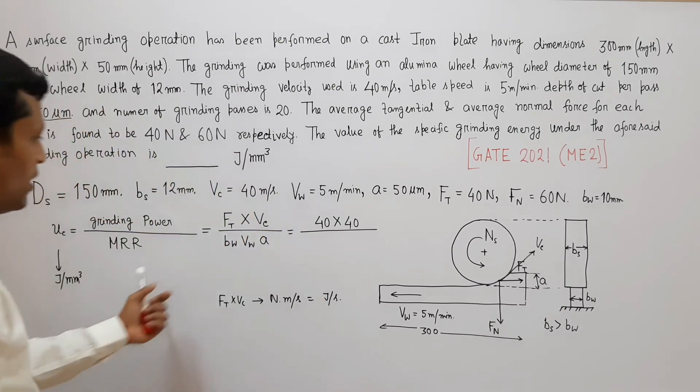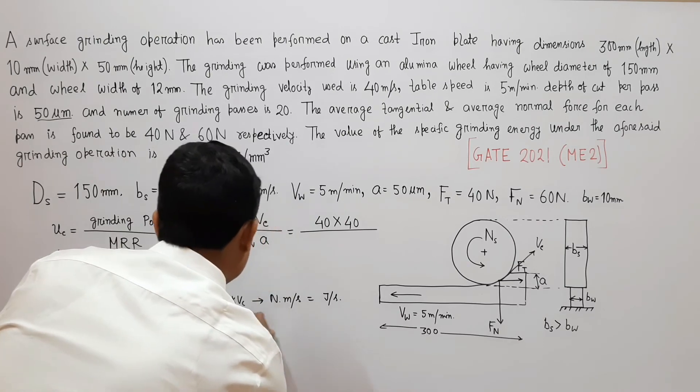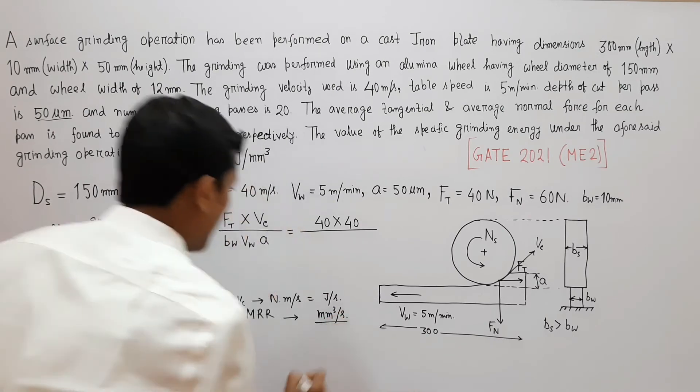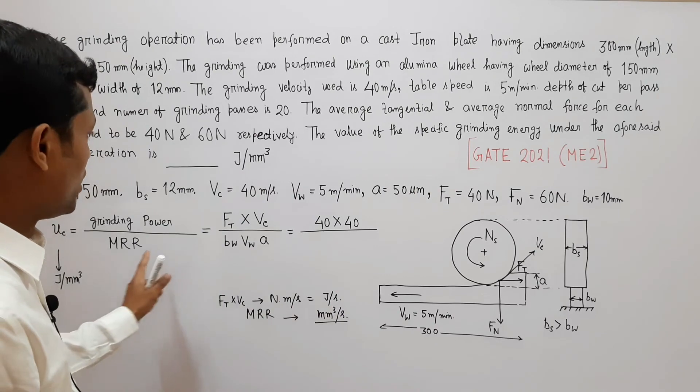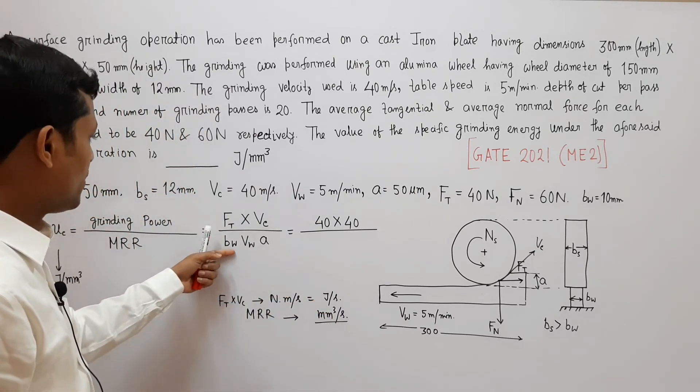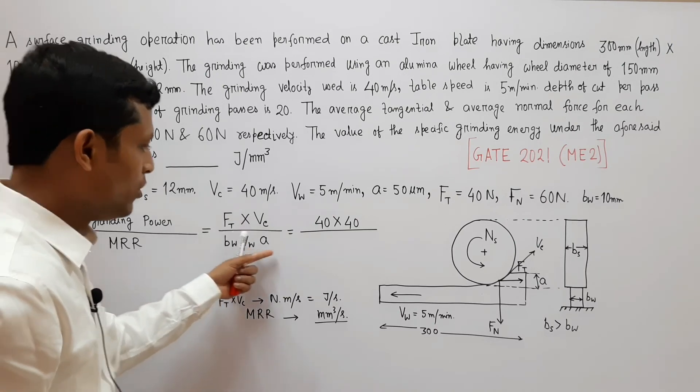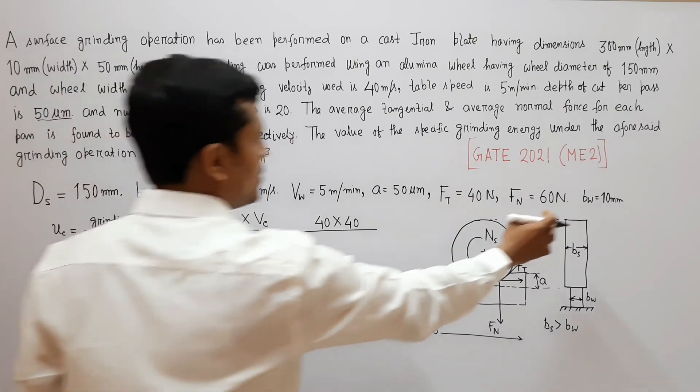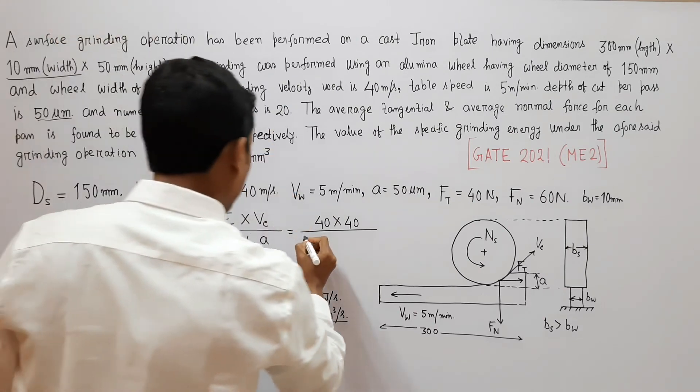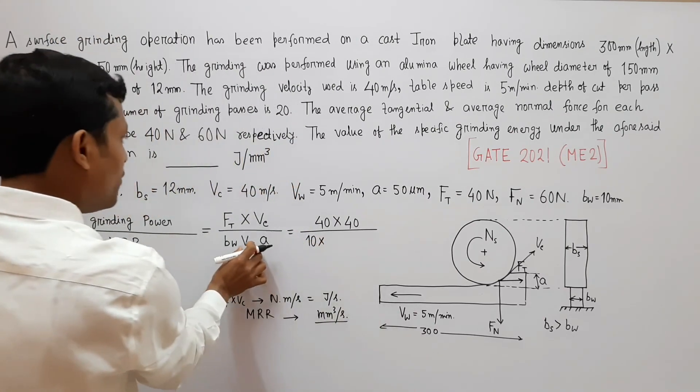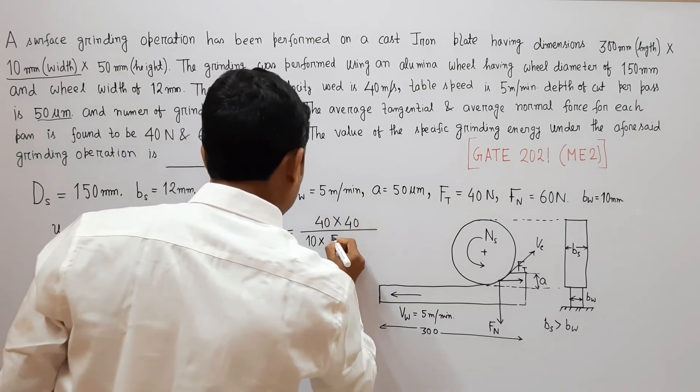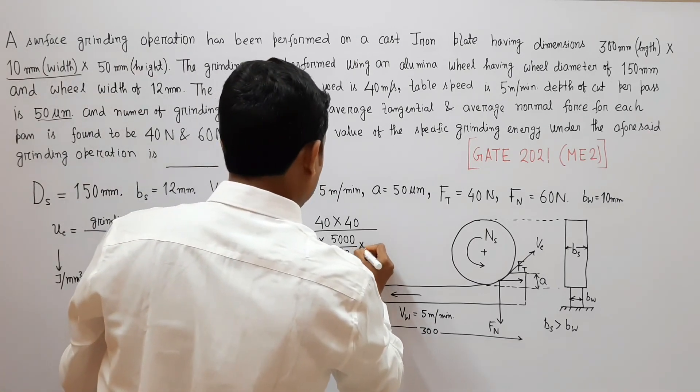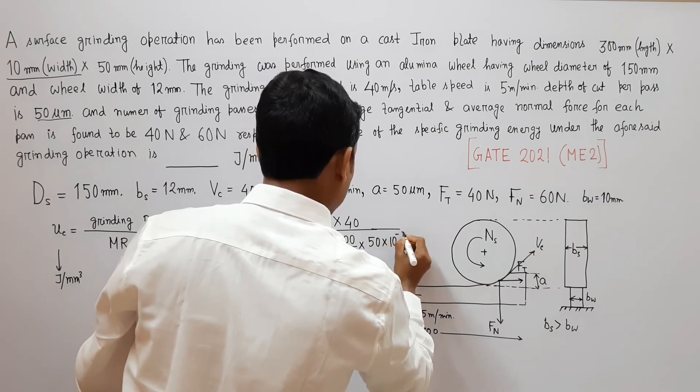All values are known to us. Ft is 40 Newton, Vc is also 40 meter per second but we have to take care of unit. You see we have to find joule per millimeter cube. So if we take Ft in Newton and Vc in meter per second, so Ft into Vc will become Newton meter per second, that is joule per second. And MRR we have to take unit of MRR in millimeter cube per second.